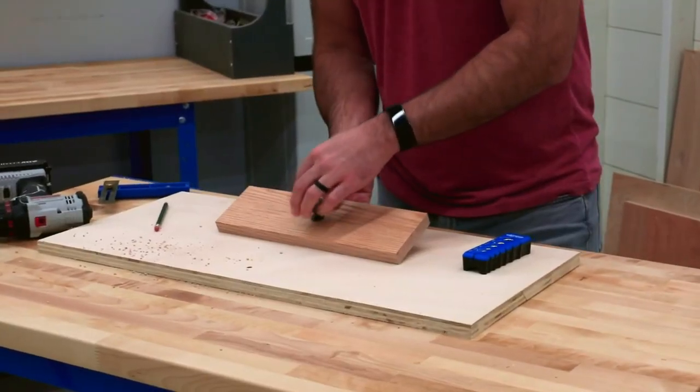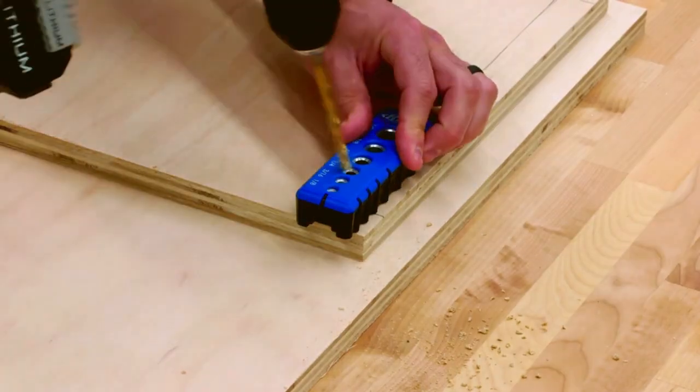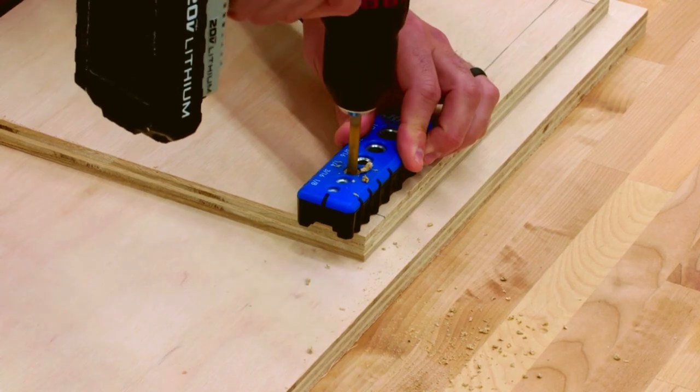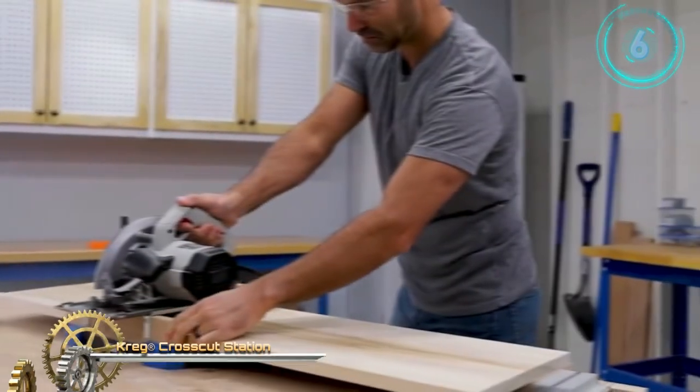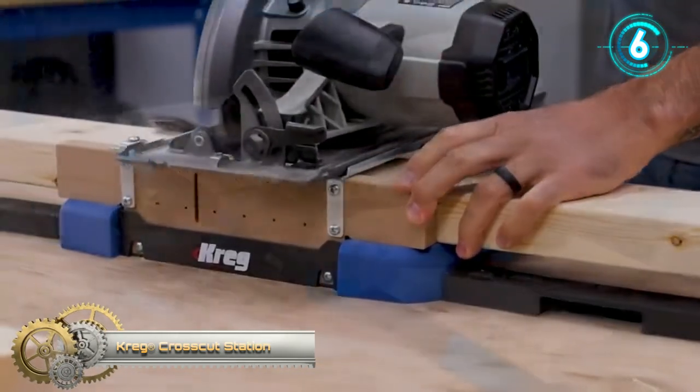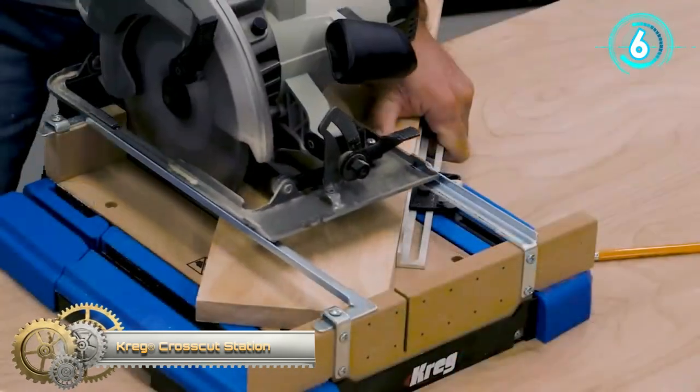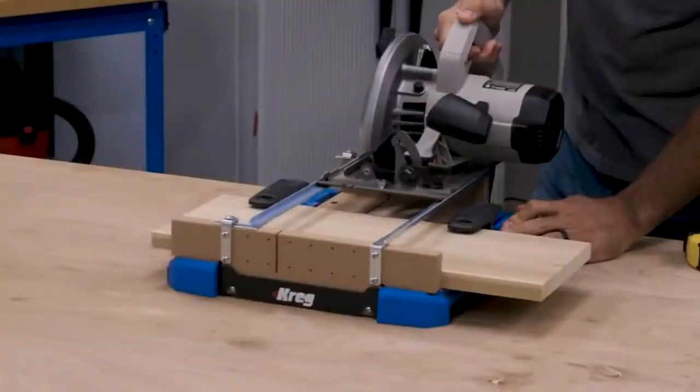Make perfect cross cuts and miters in boards up to 12 inches wide with the Craig cross cut station. This portable cutting center makes it possible to get miter saw quality cuts from your circular saw.